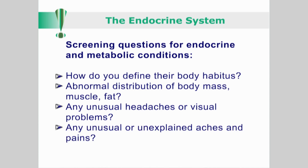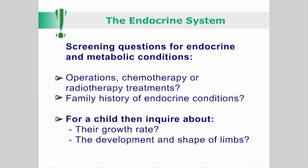How would you define the patient's body habitus or physique? Does the patient have an abnormal distribution of muscle and fat? Are there any unusual headaches or visual problems? Are there any unusual or unexplained aches and pains? Have they had any operations, chemotherapy or radiotherapy treatments? Is there a family history of endocrine conditions? If the patient is a child, then inquire from an accompanying adult about problems with their growth rate or the development and shape of the limbs. This concludes the system-specific case history.